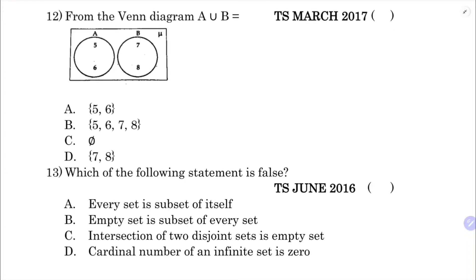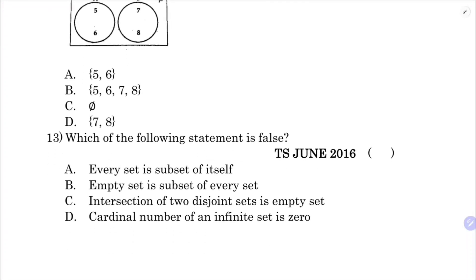From the Venn diagram, find A union B. Set A contains 5, 6, 7, 8 - these are disjoint sets in the diagram. A union B gives all the elements of A and B. The correct option is B.